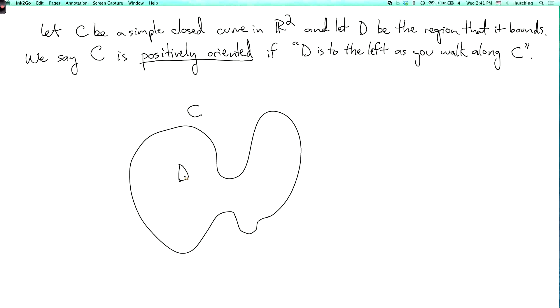When we have a simple closed curve, there is a distinguished orientation we can choose. It's the orientation which has D on the left. If you imagine there's a little ant walking along this curve C, then always immediately to its left is the region D.